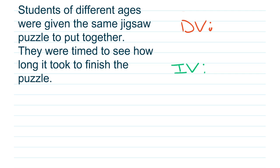Here's the situation: students of different ages were given the same jigsaw puzzle to put together. They were timed to see how long it took to finish the puzzle. Let's go ahead and practice finding the dependent variable first, because that's the easiest.